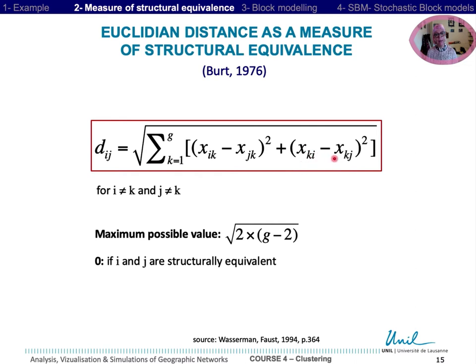The maximum possible value corresponds to the total opposition between nodes i and j relations. The minimum occurs when they are structurally equivalent.